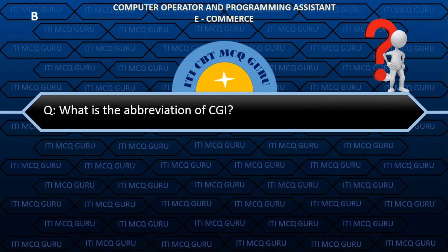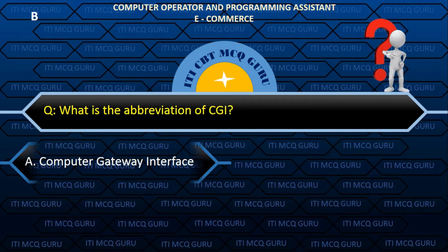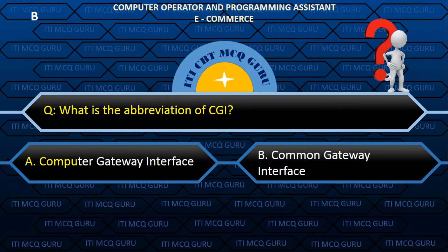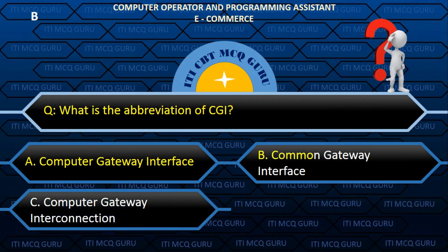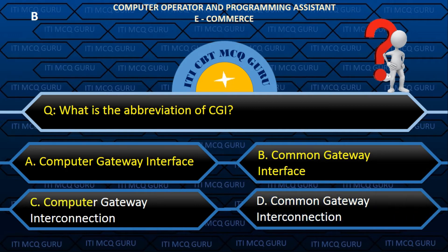What is the abbreviation of CGI? B. Common gateway interface.